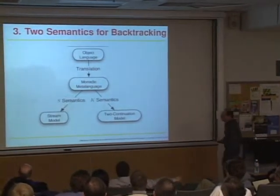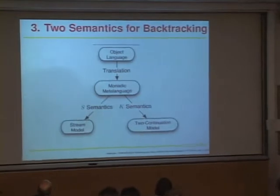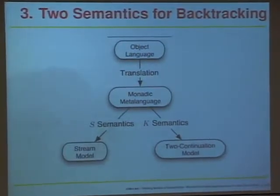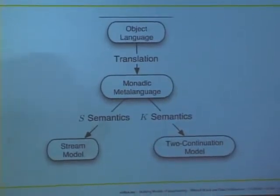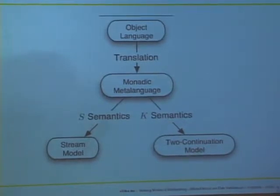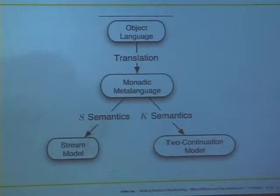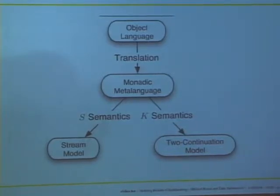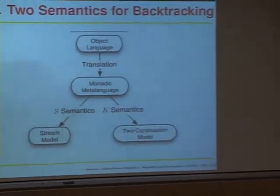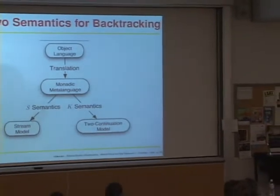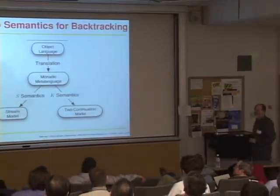Here's the big picture — my student called this the 'Teletubby slide.' We have our object language, we have a translation from that into the monadic metalanguage, which serves the same purpose as the metalanguages discussed earlier. Our two models of backtracking are two monads — two interpretations of that monadic metalanguage — and what we'd like to do is figure out what we can say about their relationship. Of course we need some commuting diagrams.